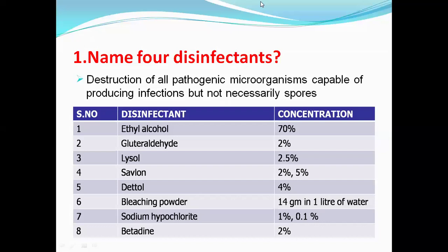First question: name for disinfectants. What is meant by disinfection? Disinfection means it is the destruction of all pathogenic microorganisms which are capable of producing infections, but not necessarily the spores. Spores are not killed by the disinfection process. Higher level disinfectants can even kill the spores, but generally disinfection kills only the vegetative forms of microorganisms. A disinfectant is the chemical substance used in disinfection that kills microorganisms.